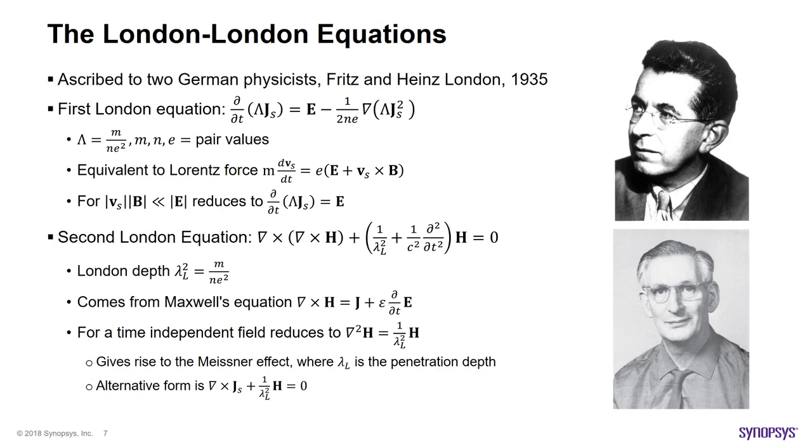One of the earliest theories of superconductivity was formed by two German physicist brothers, Fritz and Heinz London. They came up with their theory back in 1935. To put things in perspective, this is 20 years after Einstein's general theory of relativity. The London equations can be derived from classical electrodynamics. The first equation relates the time rate of change of the current density in a superconductor to the electric field and the gradient of the same current squared. The parameters you see in this equation are all for a pair of electrons, which we will later see are responsible for the transport mechanism. The first London equation is equivalent to the Lorentz force in electrodynamics combined with Newton's law, which relates the time rate of change of carrier velocity or its acceleration to the overall electric and magnetic force exerted on it. If one assumes that the magnetic field is much less than the electric field, the first equation can even be further simplified.